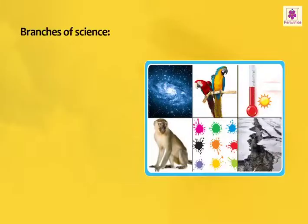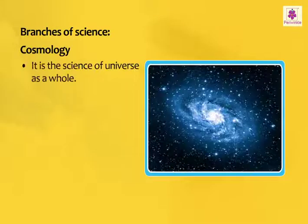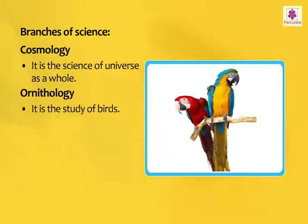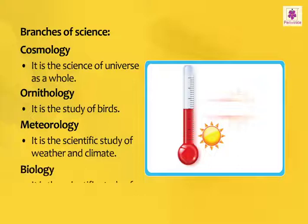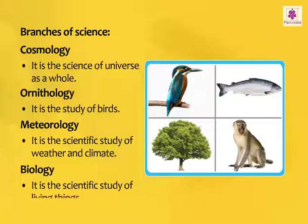The different branches of science: the science of the universe as a whole is called cosmology. The study of birds is called ornithology. The scientific study of weather and climate is called meteorology. The scientific study of living things is called biology.